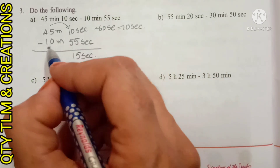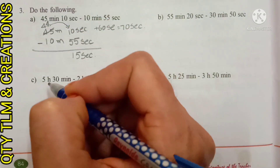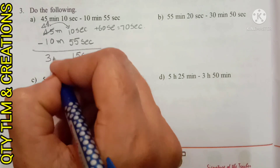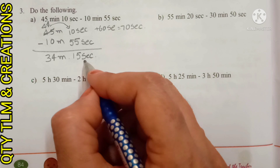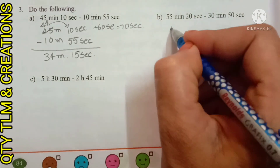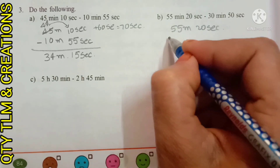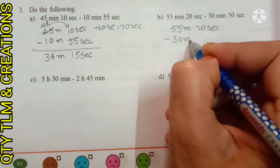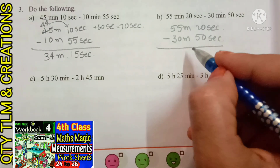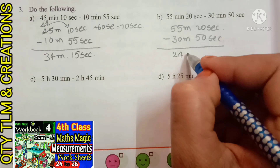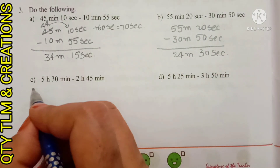Then subtract 10 minutes from 44 minutes, we will get 34 minutes. So the answer is 34 minutes 15 seconds. B) 55 minutes 20 seconds minus 30 minutes 50 seconds. We will get 24 minutes 30 seconds.